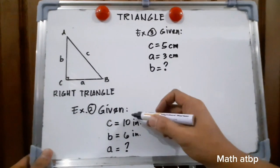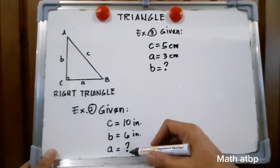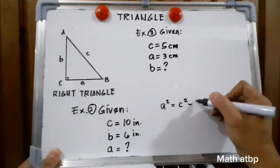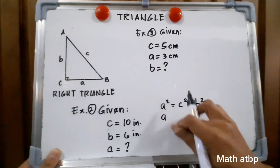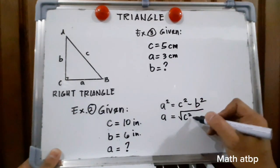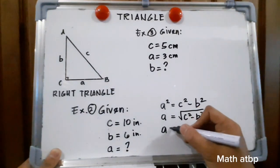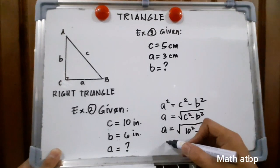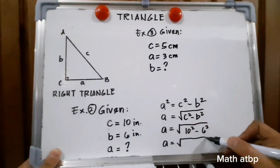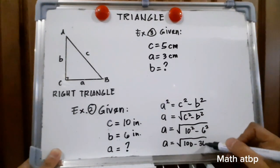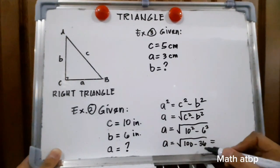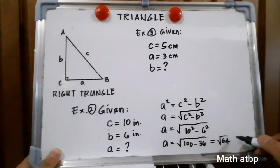Let us continue. Example number 2: given c is equal to 10 inches and b is equal to 6 inches, what is side a? We have a squared is equal to c squared minus b squared, so a is equal to the square root of c squared minus b squared. Substituting: a is equal to the square root of 10 squared minus 6 squared, which is the square root of 100 minus 36. That gives us a equal to the square root of 64, and the square root of 64 is 8. We have 8 inches for side a.